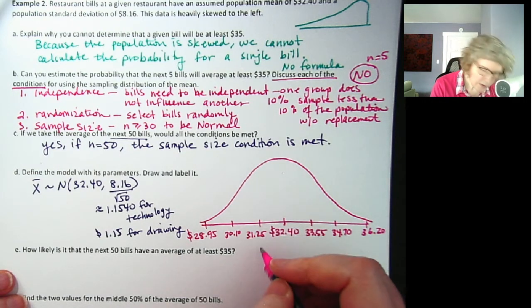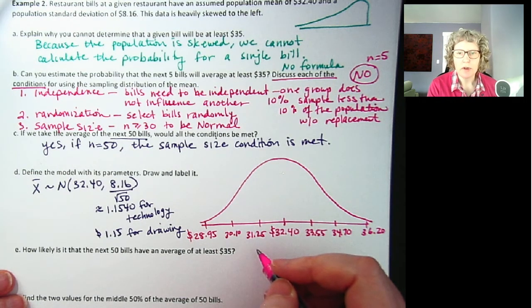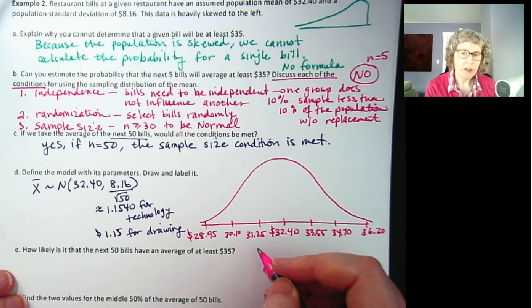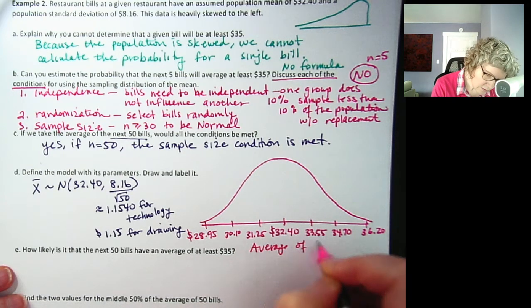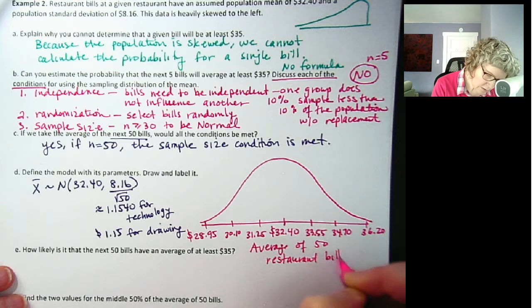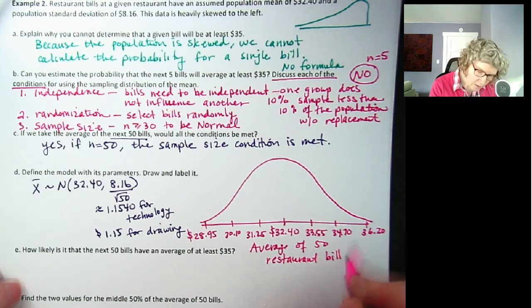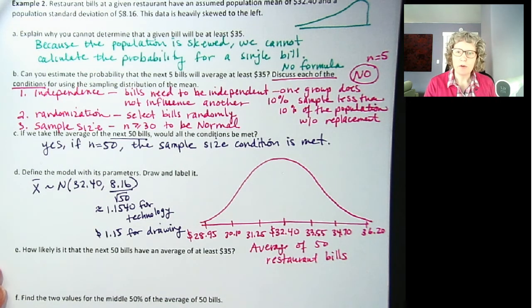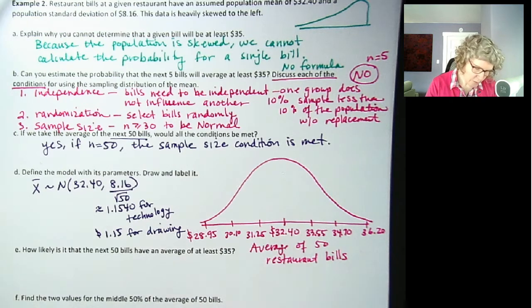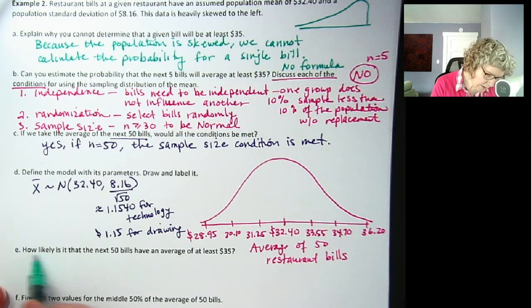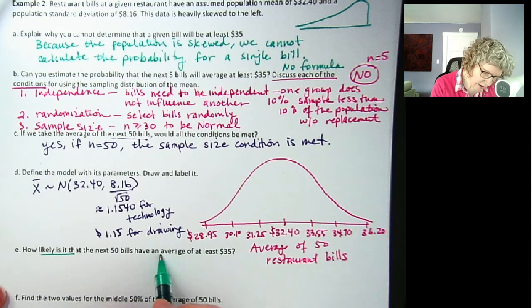So let's write what this is. This is the average of random samples of 50 bills. Or you could say average bill for groups. Average of 50 restaurant bills. Try not to make it too long. Average of 50 restaurant bills. So now we can find a probability. How likely is it that the next 50 bills have an average of at least 35?